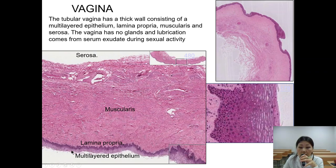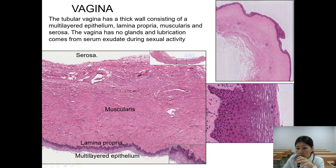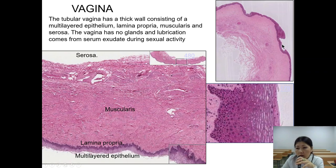You can see squamous keratinized epithelium here. As you may recall, keratinized epithelium consists of dead squamous cells without a nucleus. The muscular layer is also shown: this is the multi-layered epithelium — thick multi-layered epithelium — followed by blood vessels and then serosa.